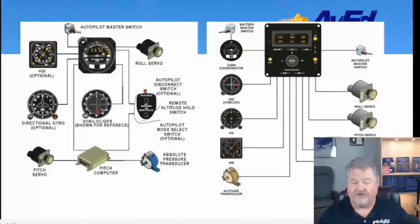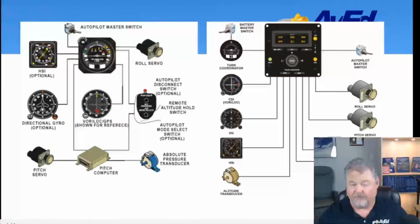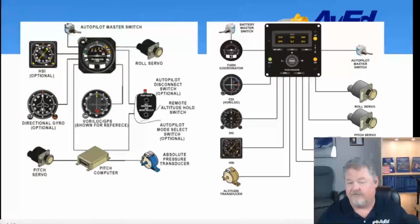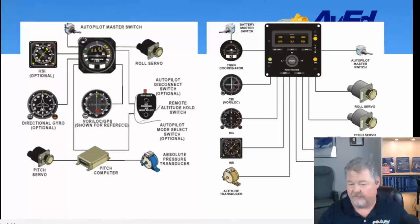I want to show you the two sides. On the left is the model 20/30s and on the right is the 40s/50s. They all have the same basic issue — except on the 20/30s, the pitch computer, pitch servo, and absolute transducer simply send a signal of on, off, and trim/out-of-trim to the control head. Versus on the S40 and S50, the turn coordinator is now separate, and all the other servos actually drive to it also because it controls the servo.